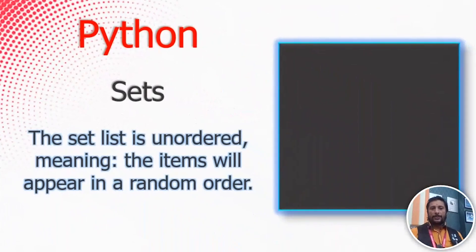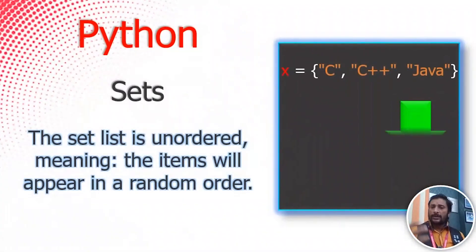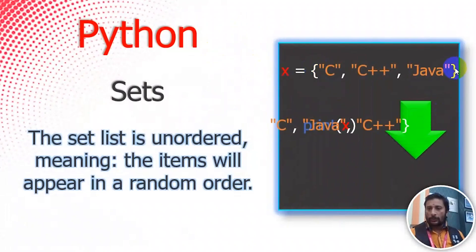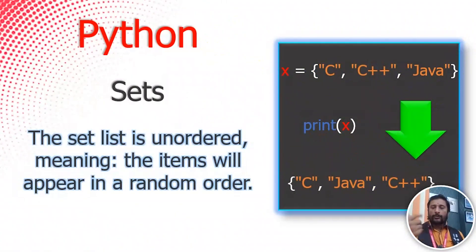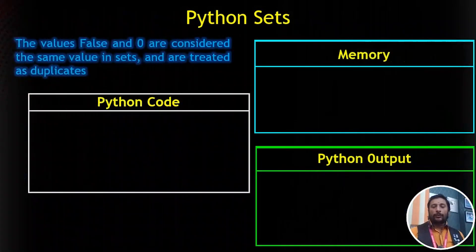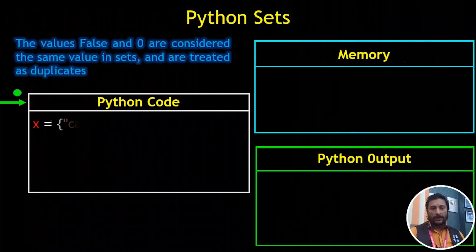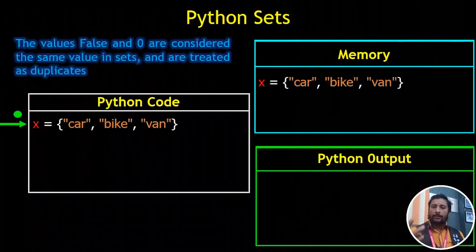Python sets — as I told you, this is like a list but uses curly braces. When you print it, it is unordered — meaning the printed output order may differ from the input order. Let's go to our code. We have a set with three strings: Car, Bike, Van.